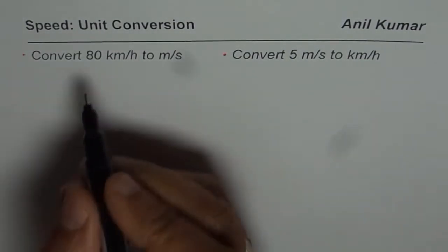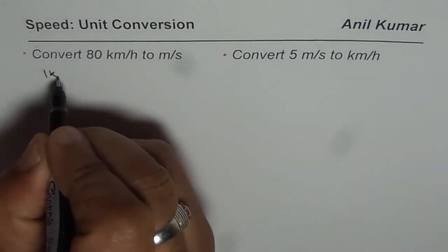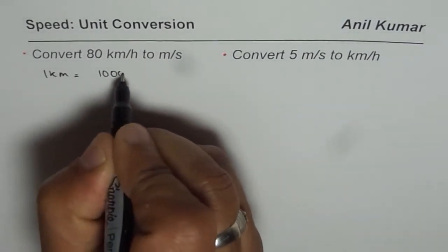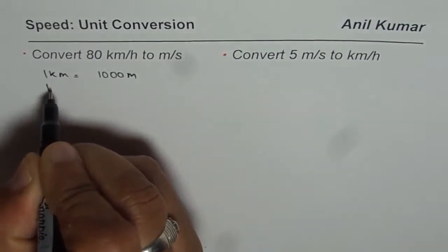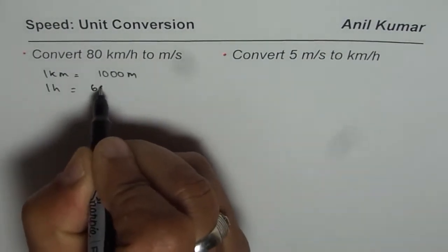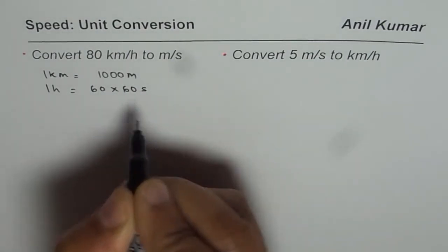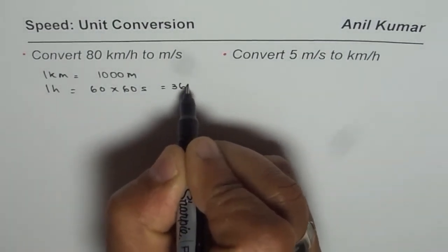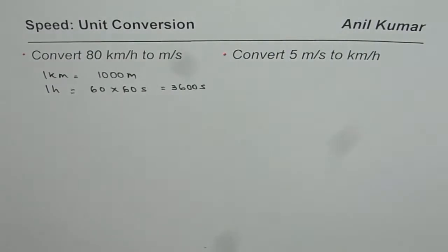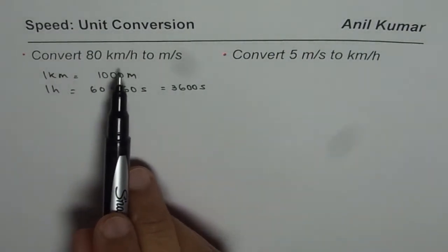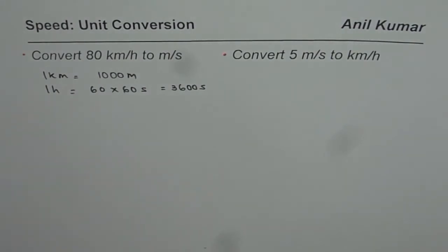I hope you know that 1 kilometer equals 1000 meters and 1 hour equals 60 times 60 seconds which is 3600 seconds. So that is known to you. You need to convert 80 kilometers per hour to meters per second. You can pause the video, do the conversion and check with my solution.